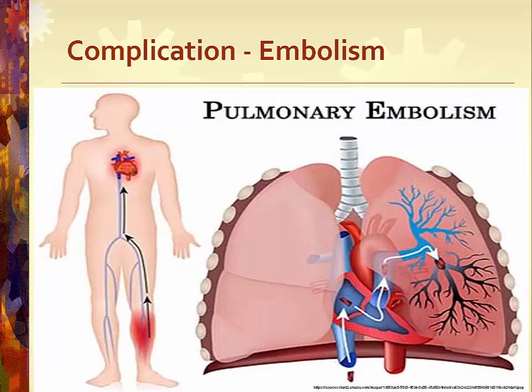Monitor IV solutions carefully and change the bag before it becomes empty. Frequently check that all connections are secure. Symptoms of an air embolism include shortness of breath, anxiety, sudden chest pain, and rapid heart rate with a drop in blood pressure. The cause could be movement of a previously stationary blood clot. Stay with the patient and call for help. Immediately place the patient on their left side with feet elevated — this helps the pulmonary artery absorb small air bubbles. Administer oxygen and notify the physician immediately. Management of embolism: administer oxygen, clamp the catheter, place the patient on their left side with head down especially for an air embolism, and notify the physician.